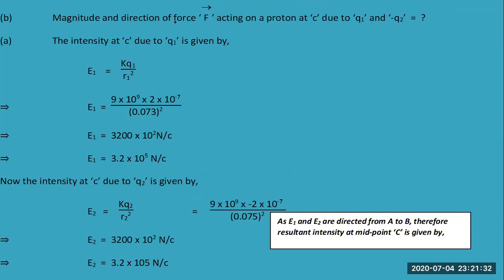The magnitude and direction of force acting at point C due to q1 and -q. The intensity at C due to q1 is given by the formula kq1/r1², which equals 9×10^9 × 2×10^-7 / (0.075)². Then you have calculated E1.